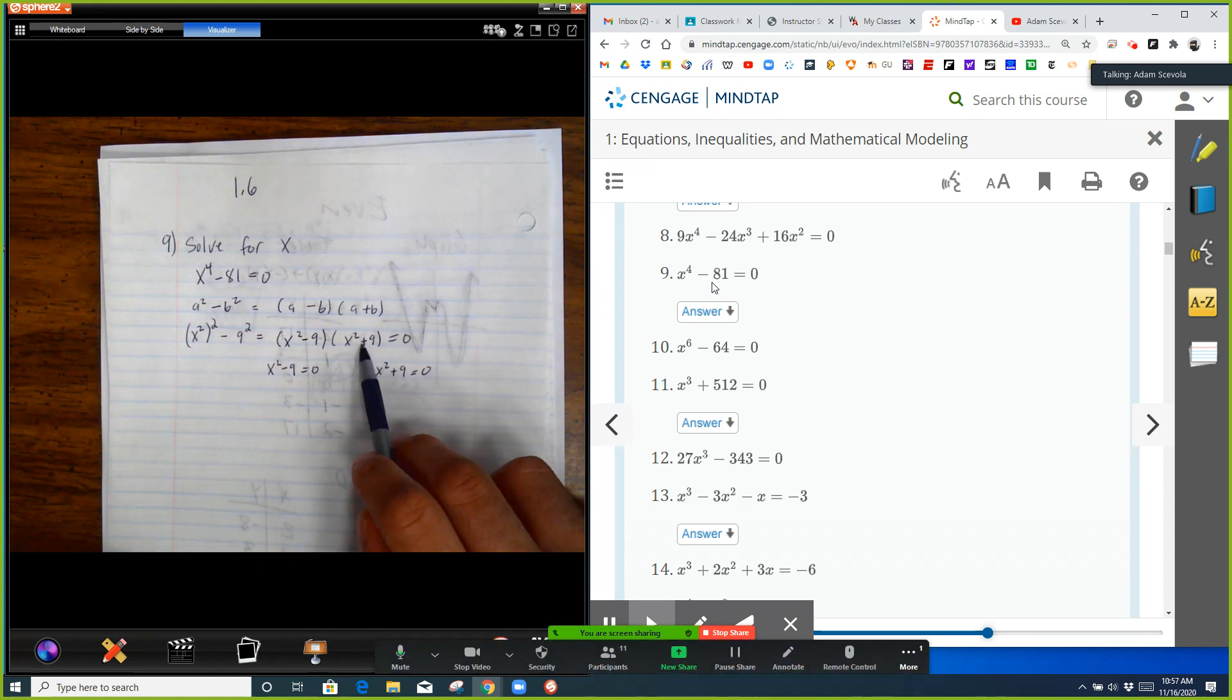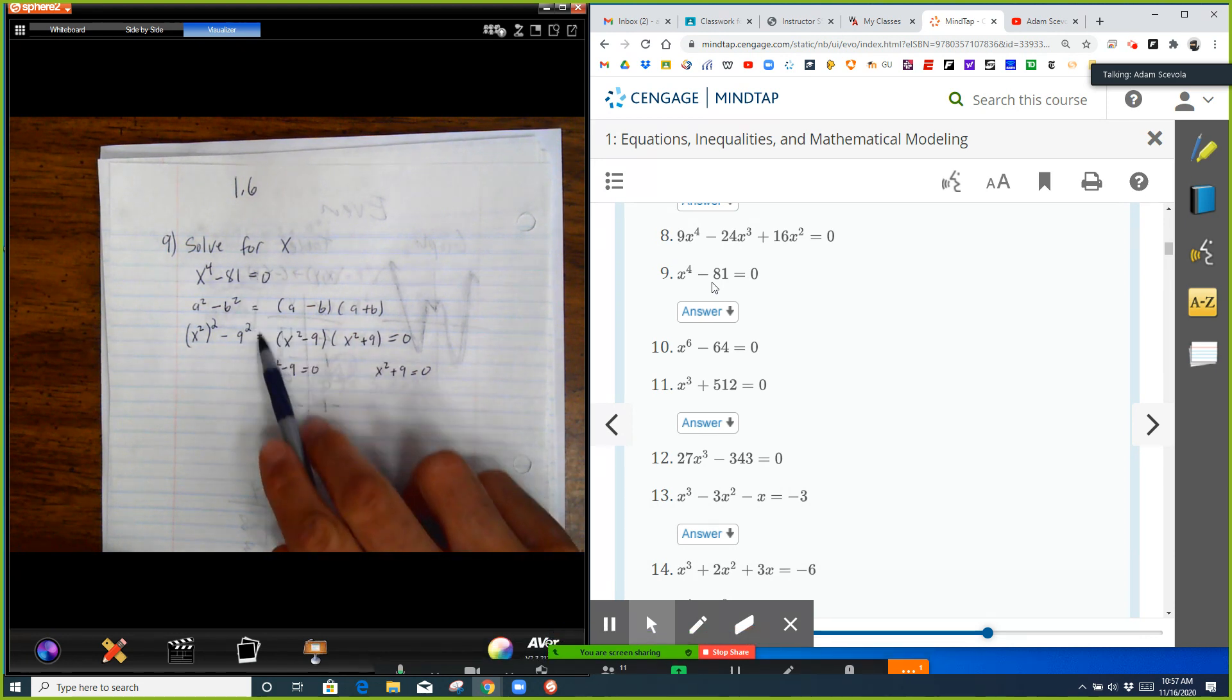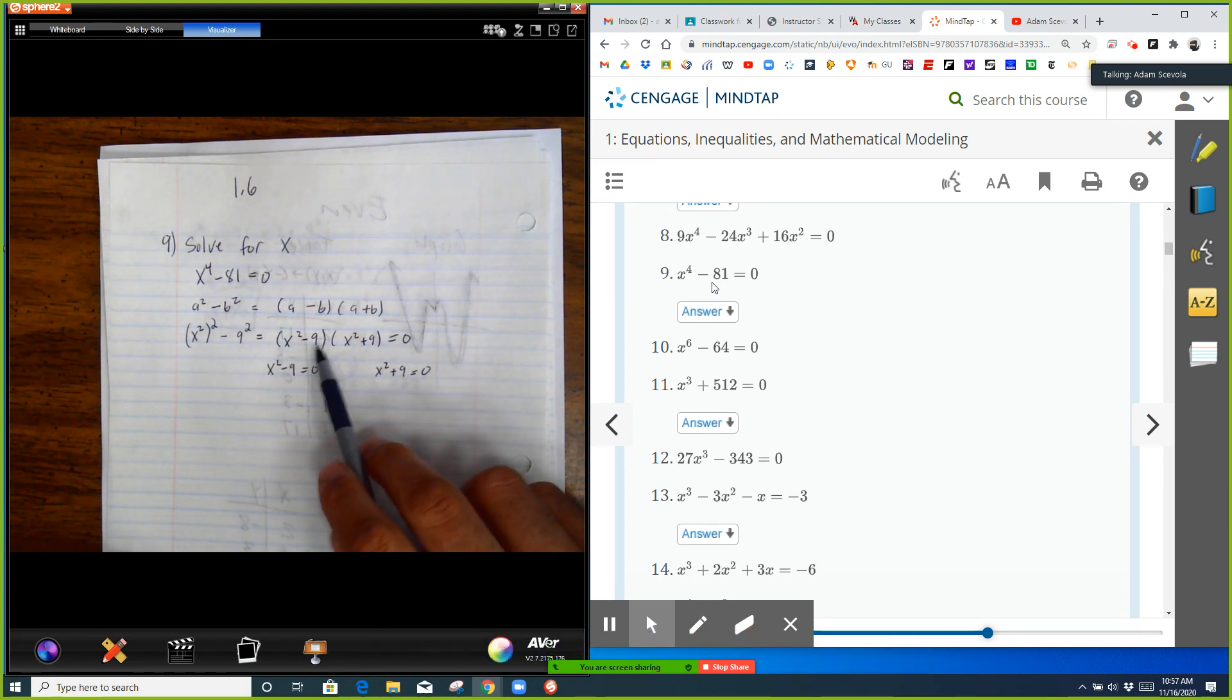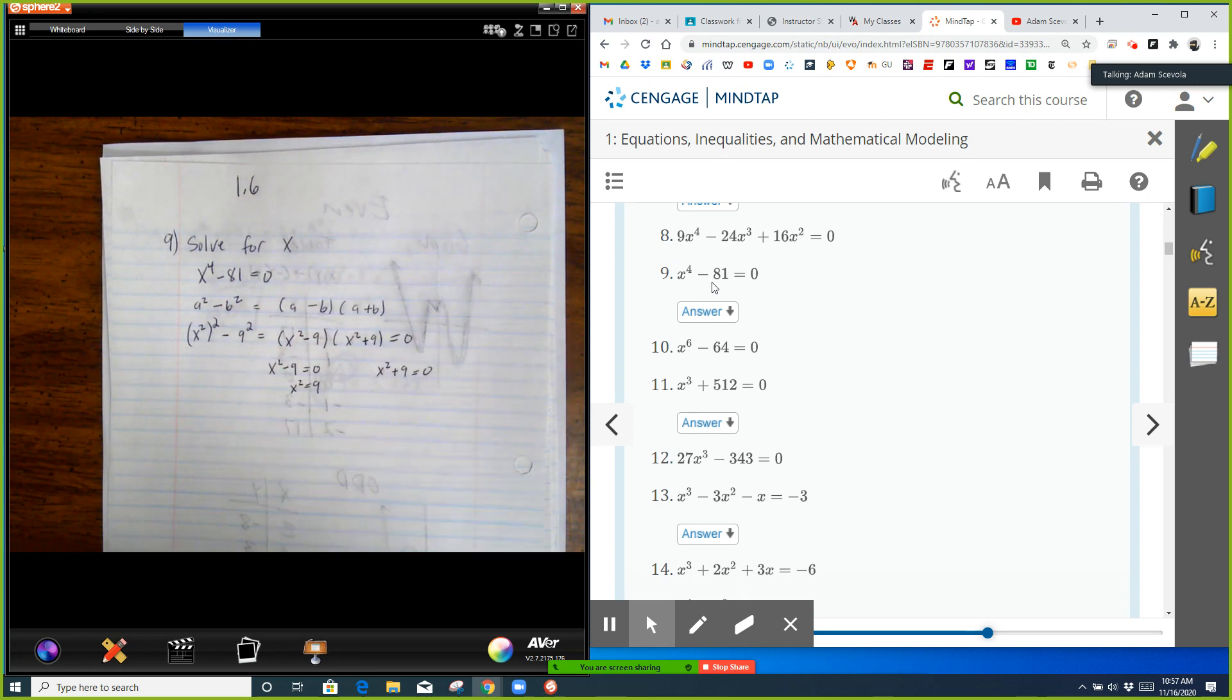Add 9 to both sides, take the square root, and you get x equals positive or negative 3. Subtract 9 on both sides, x squared is negative 9, take the square root, and you get x equals positive or negative 3i.